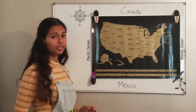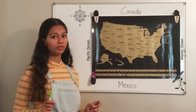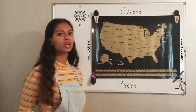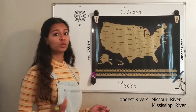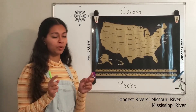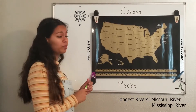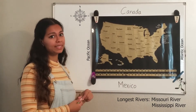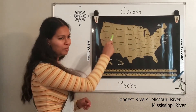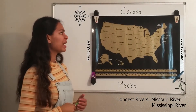The next question covers the two longest rivers in the United States. There are multiple rivers, but these are the two longest. A fun way to remember them is that both names start with 'Miss' — they are the Missouri River and the Mississippi River.